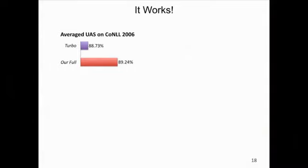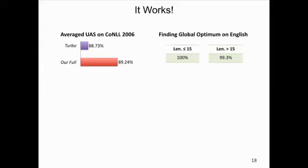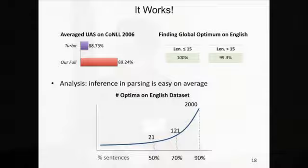Despite its simplicity, this randomized greedy algorithm works incredibly well in dependency parsing. It effectively utilizes global features and outperformed the previous state-of-the-art parser on the kernel dataset. In first-order parsing, we found this algorithm returns the global optimal solution for almost all sentences. Our analysis shows this is not a coincidence: the number of local optima in the search space is actually very small — for English, no more than 21 for 50% of sentences.